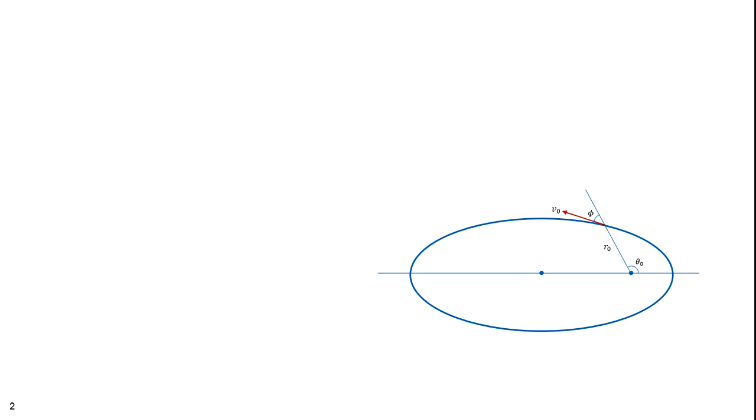Suppose a satellite of mass M is launched from space a distance of r0 from the center of the Earth. Assume we know the angle of launch phi and the initial velocity v0. How do we find the size, shape, and orientation of the orbit?